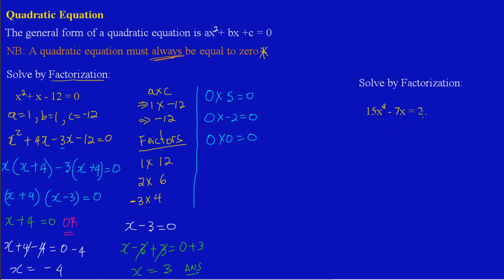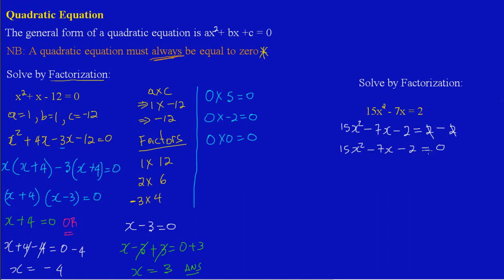I have a positive 2 on the right side, so I will subtract 2 from both sides of the equation. So I'm going to say 15x squared minus 7x, and I change the positive 2 to a negative — subtracting 2 from both sides. The positive 2 will cancel out with the negative 2, giving me 15x squared minus 7x minus 2 equal to 0. Now we have this quadratic in the general form: ax squared plus bx plus c equals 0.